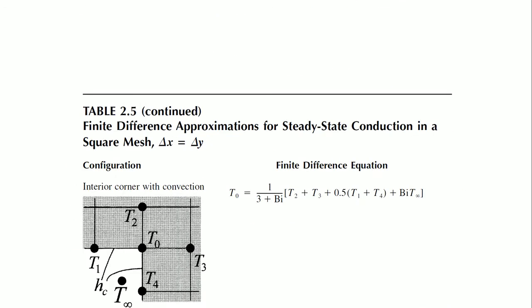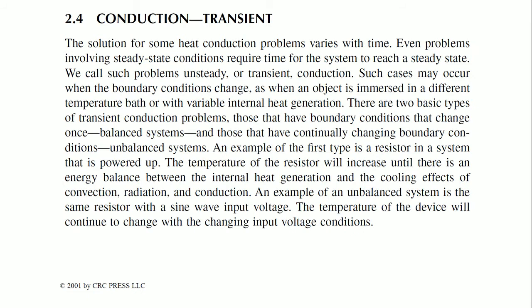I will skip all these calculations and come to one important thing — we end up with transient conduction, meaning the time for the system to reach a steady state. Non-steady or transient conduction occurs when boundary conditions change, an object is immersed in a different temperature, or there is variable internal heat generation — which is the reality in electronics. Inside, heat is not uniform; it may be a sine wave or a square wave, or variants with pulse-width modulation.